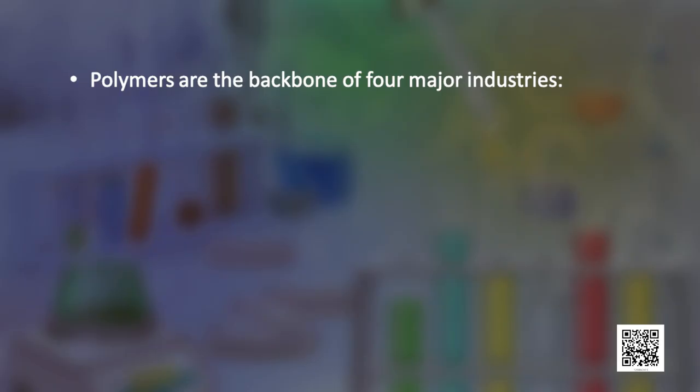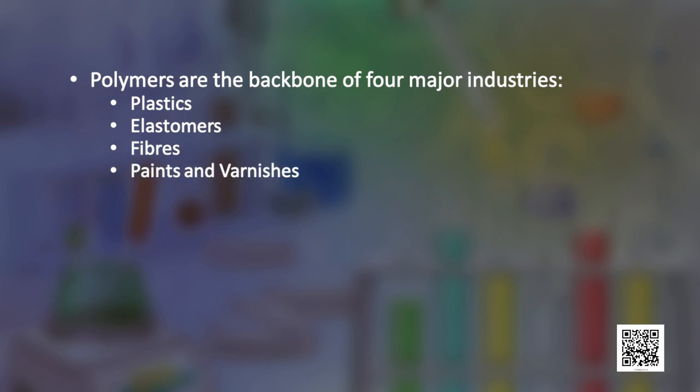Indeed, polymers are the backbone of four major industries: plastics, elastomers, fibres, and paints and varnishes. During this discussion, we will explore polymers and macromolecules. We will define frequently used terms such as monomer, polymerization, degree of polymerization, and the difference between a homopolymer and a copolymer. We will also talk about properties of polymers that make them unique and how polymers are classified into different groups and subgroups.